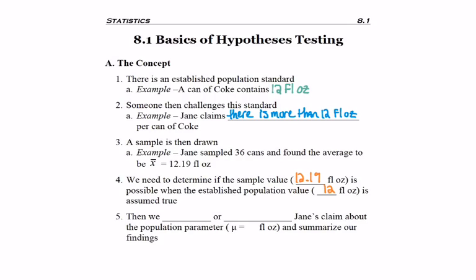And so when we determine whether it's reasonable or not, then we're either going to reject or we will not reject Jane's claim about the population parameter being more than 12 ounces per can of Coke. And then we'll summarize our findings.